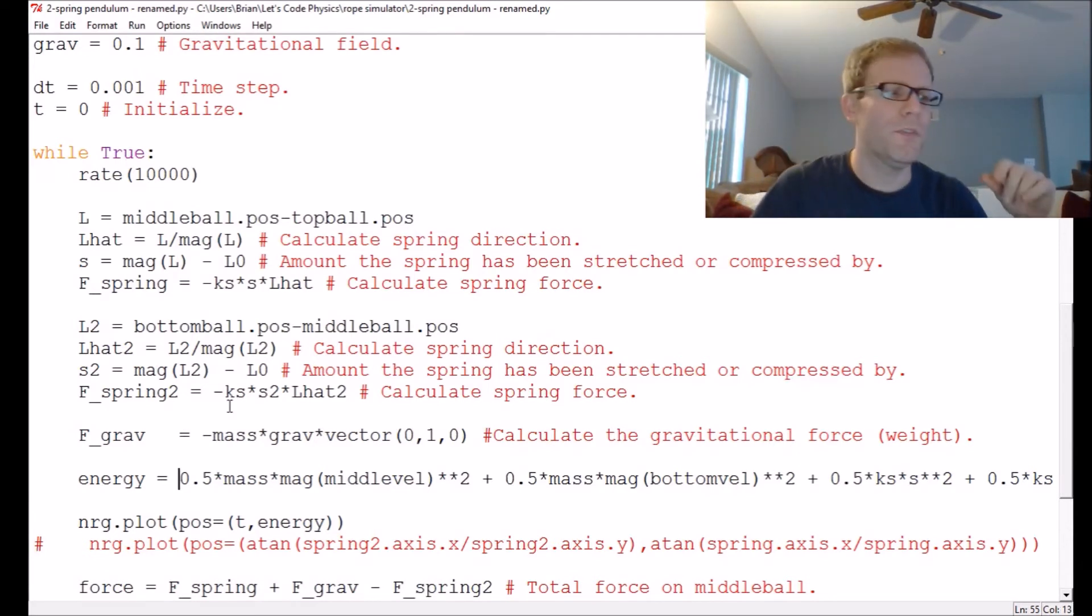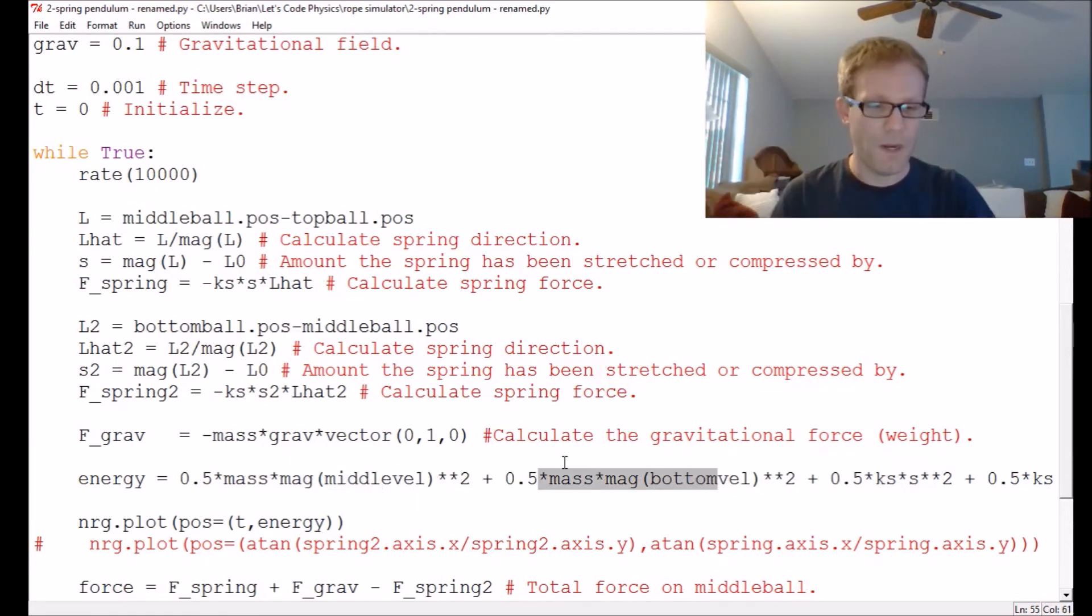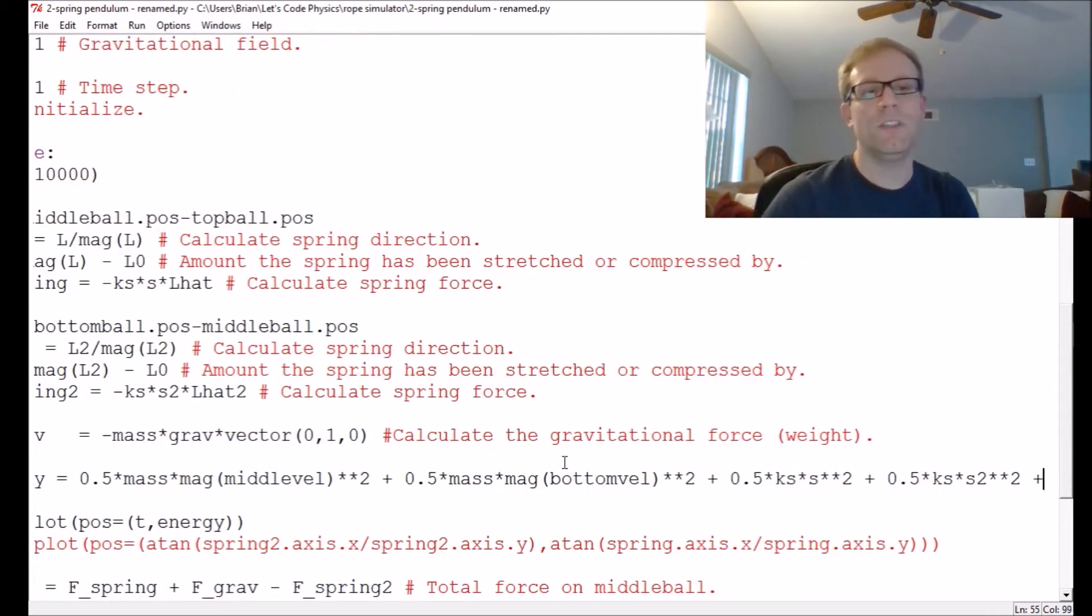So you probably remember from school that energy comes in two basic types, kinetic energy and potential energy. Kinetic energy almost always looks the same. It's always one half times the thing's mass times its velocity squared. Well, we've got two things in motion. We're not worried about that top ball, right? That thing's not moving. We've got two things moving, the middle ball and the bottom ball. So we've got a kinetic energy for the middle ball and a kinetic energy for the bottom ball. So each one of those is one half mv squared. You just calculate each one and add them together.